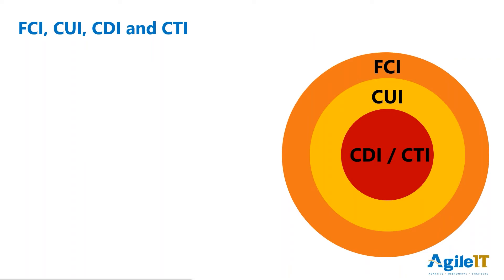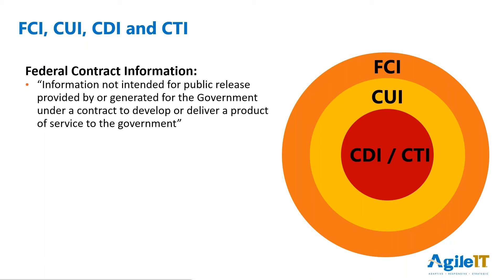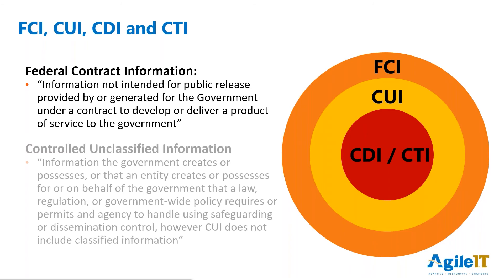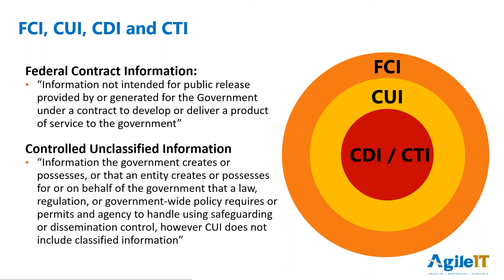Federal contract information is primarily around the Defense Supply Chain — the people that are providing food and janitorial services. What I want you to take away is that it is information not intended for public release. Then there's controlled unclassified information. The thing to remember is that it's information that the government creates, or that an entity creates on behalf of the government, that is subject to being handled with safeguards and dissemination controls. It does not include classified information.